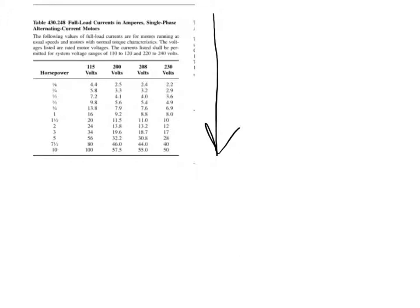Here's the table right from the code book — I just cropped it down so it's a little easier to read. Like any standard table, we're going to go down the horsepower column until we find our correct horsepower. Then we go across until we find the right voltage column. Where those two intersect, we have our information.